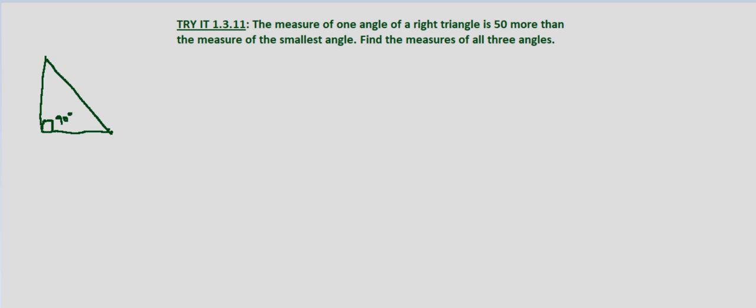Now let's write this in terms of, let's call one of the measures A. So let's let A equal the measure of angle 1, and then we're told that the other angle, besides the 90 degree angle, is 50 more than the measure of the smallest angle, so A is the smallest angle, so A plus 50 equals the measure of angle 2, and we know 90 degrees is the measure of angle 3.